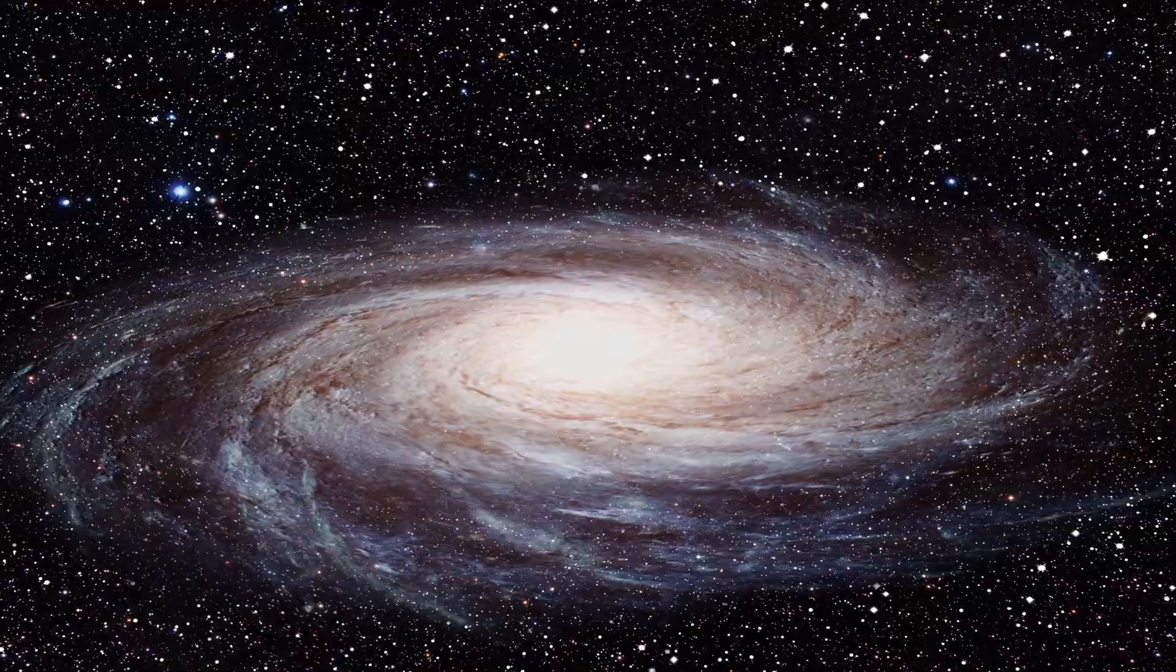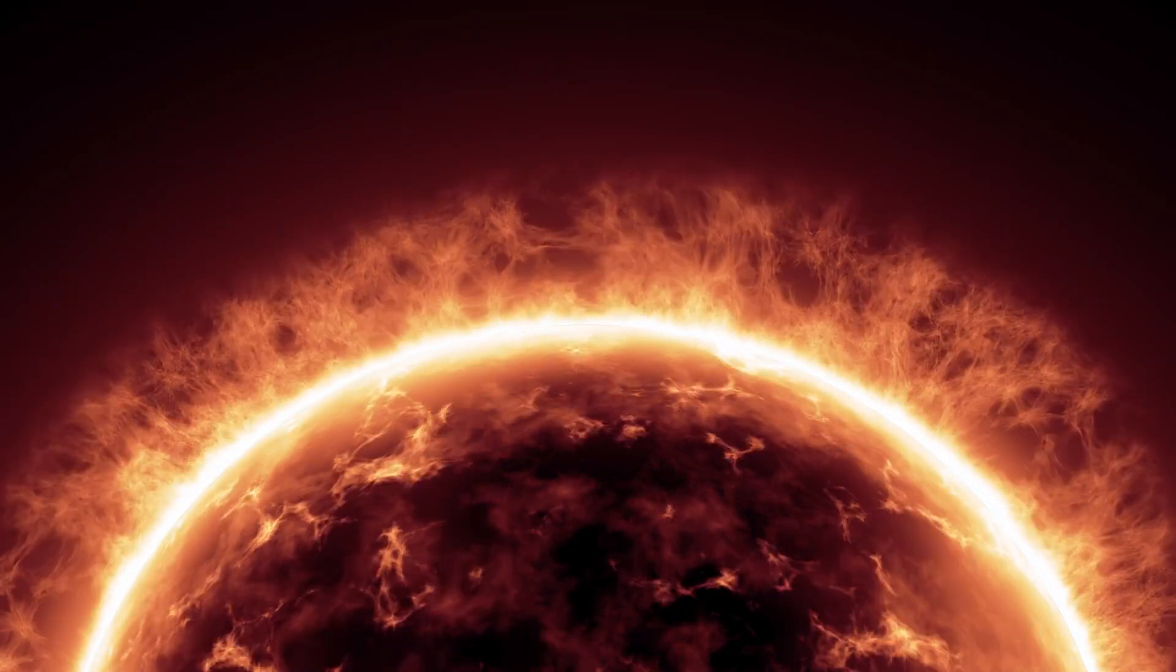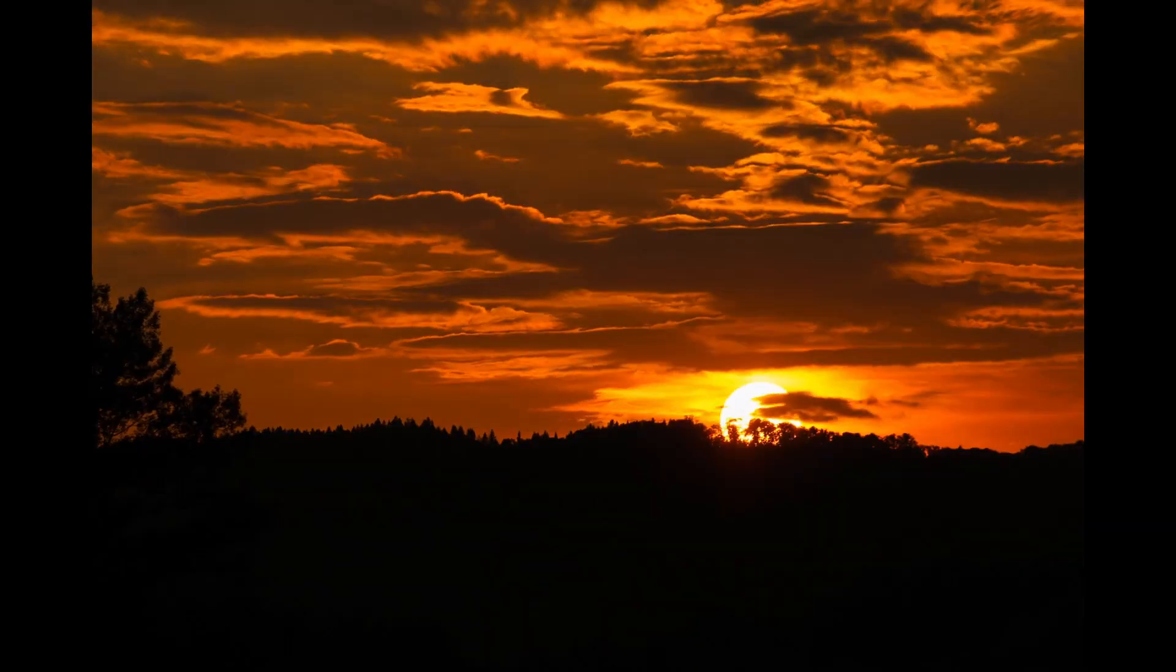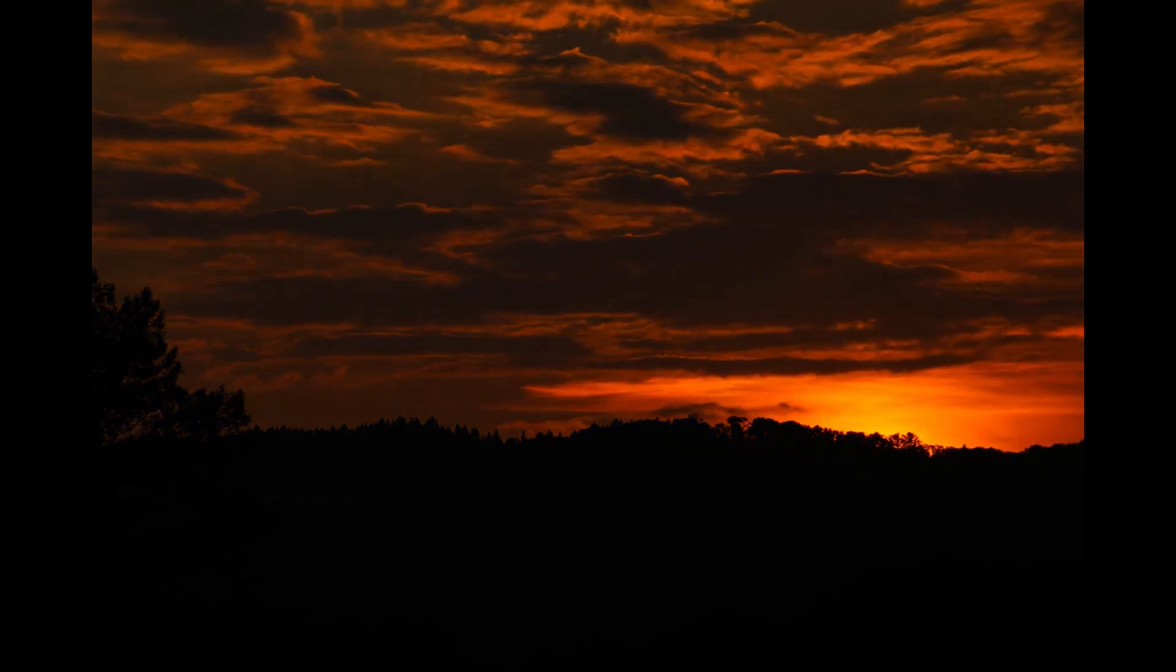Let's go from big to small. The sun consists of approximately 73% hydrogen. The disappearance of hydrogen would cause sudden darkness all around the universe. We'd go blind for a moment.